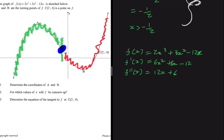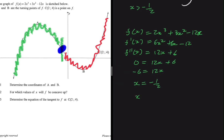Setting the second derivative equal to zero: 0 = 12x + 6, so −6 = 12x, giving x = −1/2. Again, when x is greater than −1/2 the function is concave up. That's the second way of doing it.